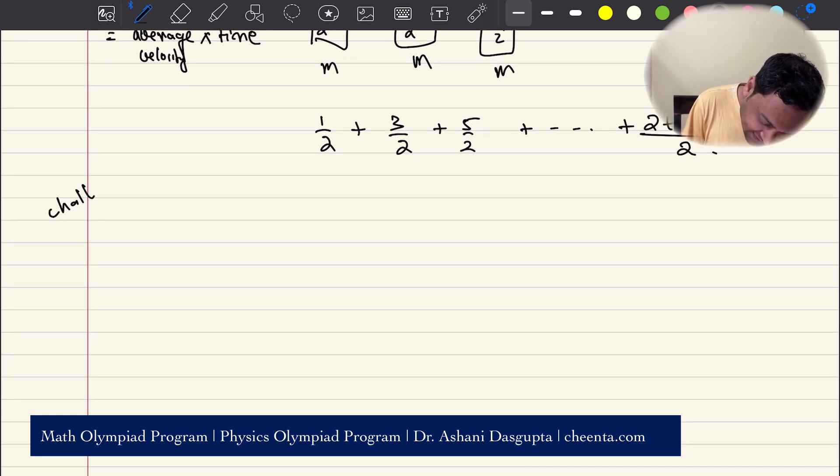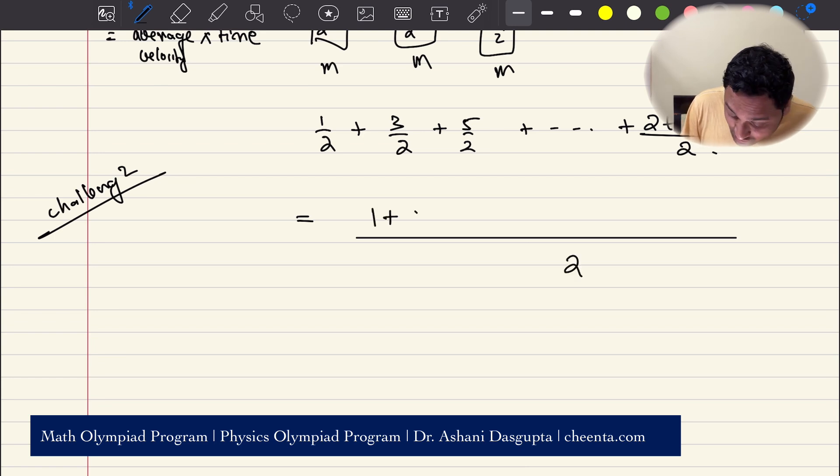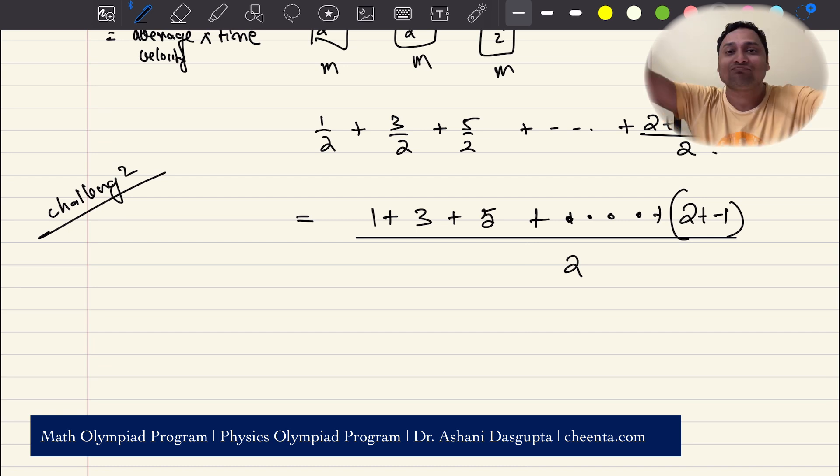Now you see almost magically the sum of the first t odd numbers comes up. This is challenge 2. Can you simplify this? If you take the LCM of two, the numerator is the sum of t odd numbers. You already know the formula. Just go ahead and calculate this and give me the final answer in the comment section. The sum of odd numbers formula that's out there in mathematics almost magically comes up while we try to calculate the distance traveled in t seconds with acceleration one meter per second per second and initial velocity zero.